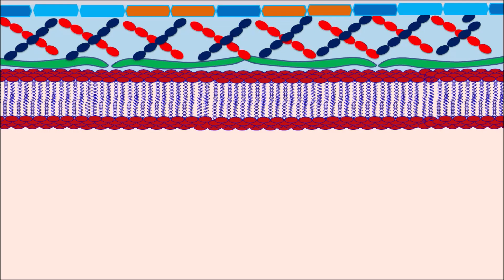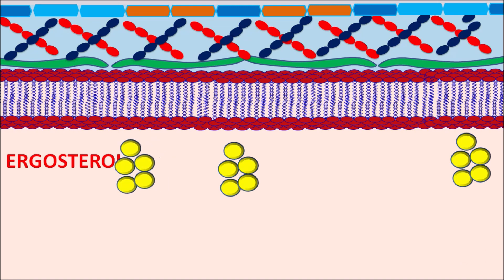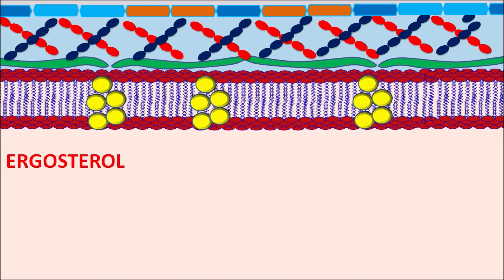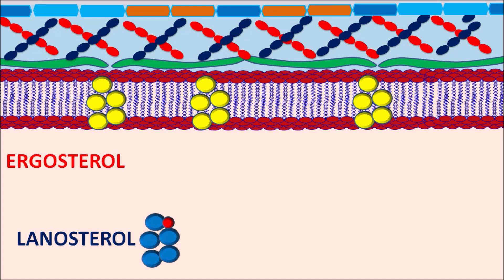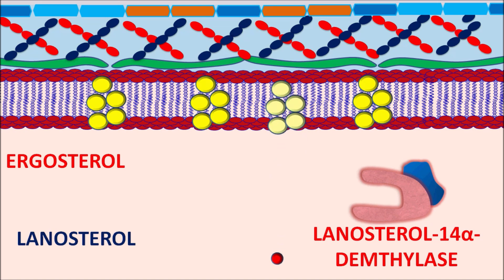Now let us see how this drug acts. Within the fungal cell, one of the important lipids is ergosterol. Ergosterol is synthesized within the cell and then incorporated into the fungal cell membrane. When ergosterol is incorporated, it produces rigidity to the membrane so that the fungal cell membrane cannot be ruptured easily. For the synthesis of ergosterol, one precursor required is lanosterol, which is converted into ergosterol by the enzyme lanosterol 14-alpha demethylase.